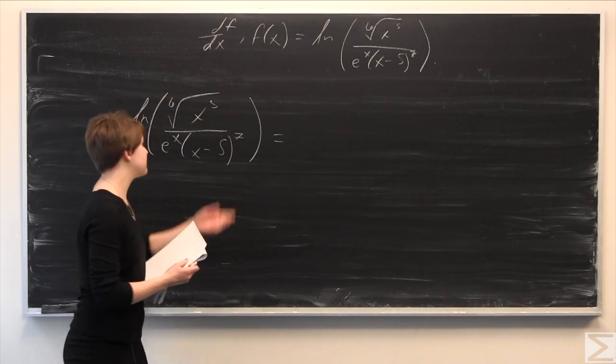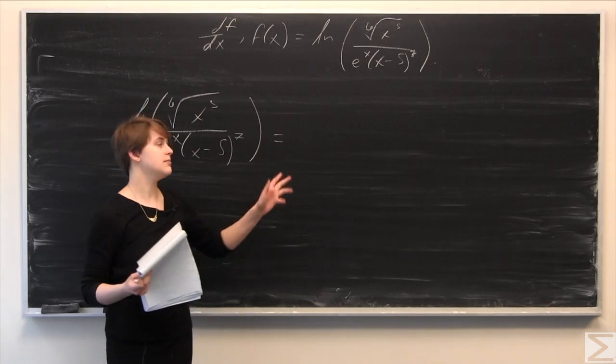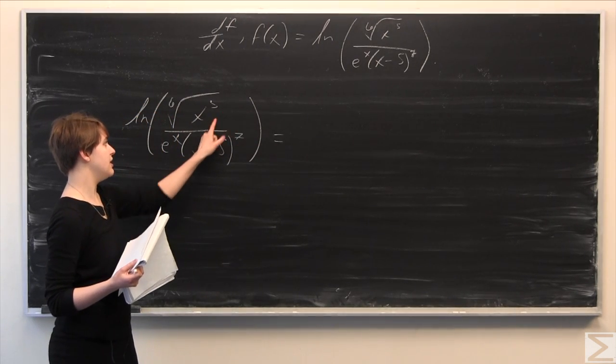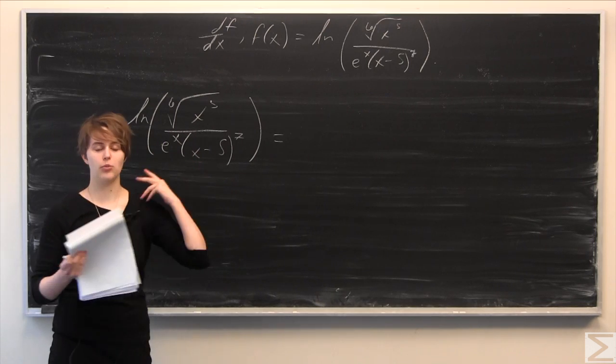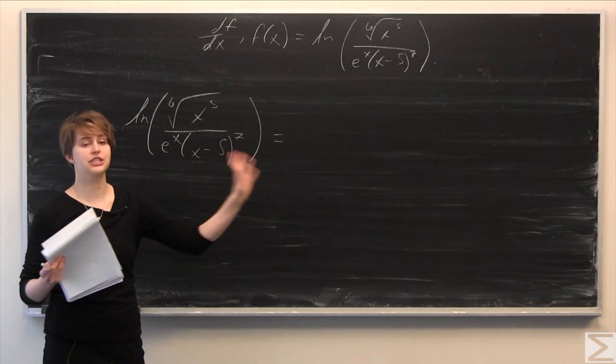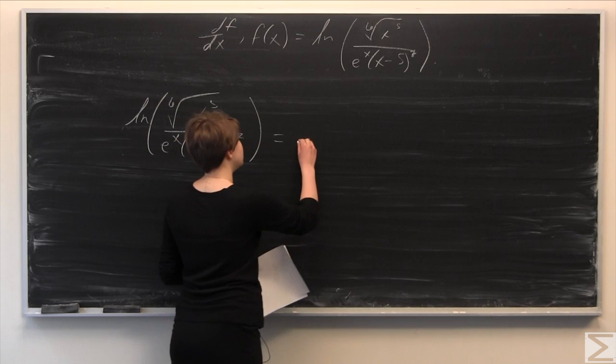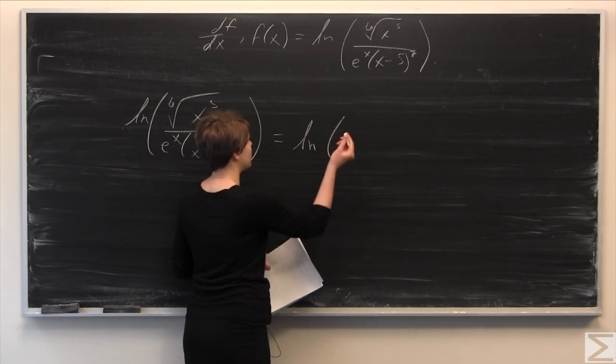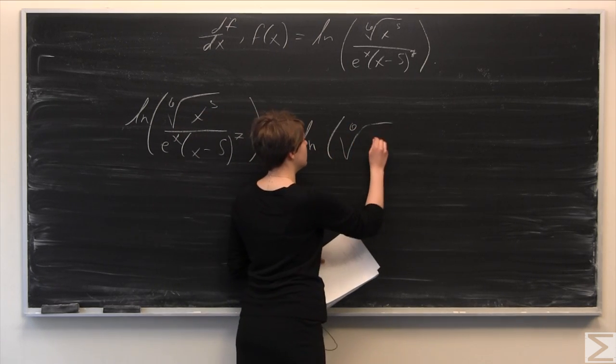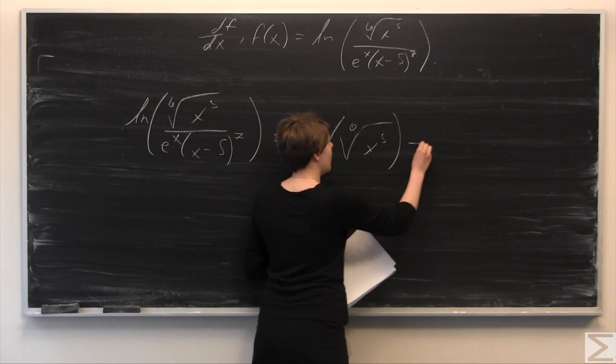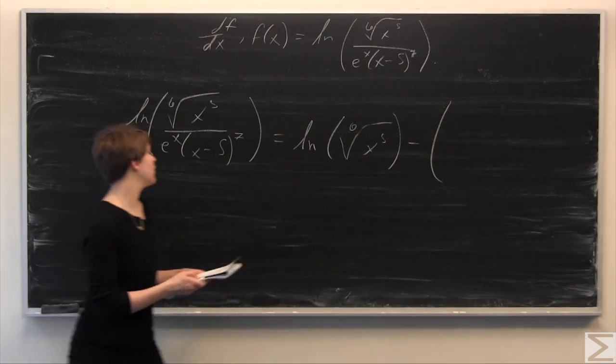This is equal to—because when we're dividing under a logarithm we can subtract, and when we're multiplying under a logarithm we can add through the logarithm—this is going to be equal to the natural log of the numerator, so the sixth root of x to the fifth, minus and we're going to subtract off the entire quantity down here.